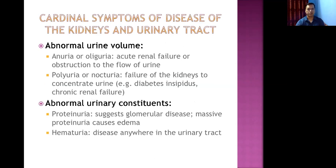Another important symptom is abnormal urinary volume — either oliguria or anuria. Oliguria is a cardinal feature of renal dysfunction, classically defined as passage of less than 400 mL of urine in 24 hours. Anuria means complete absence of urine flow in 24 hours.